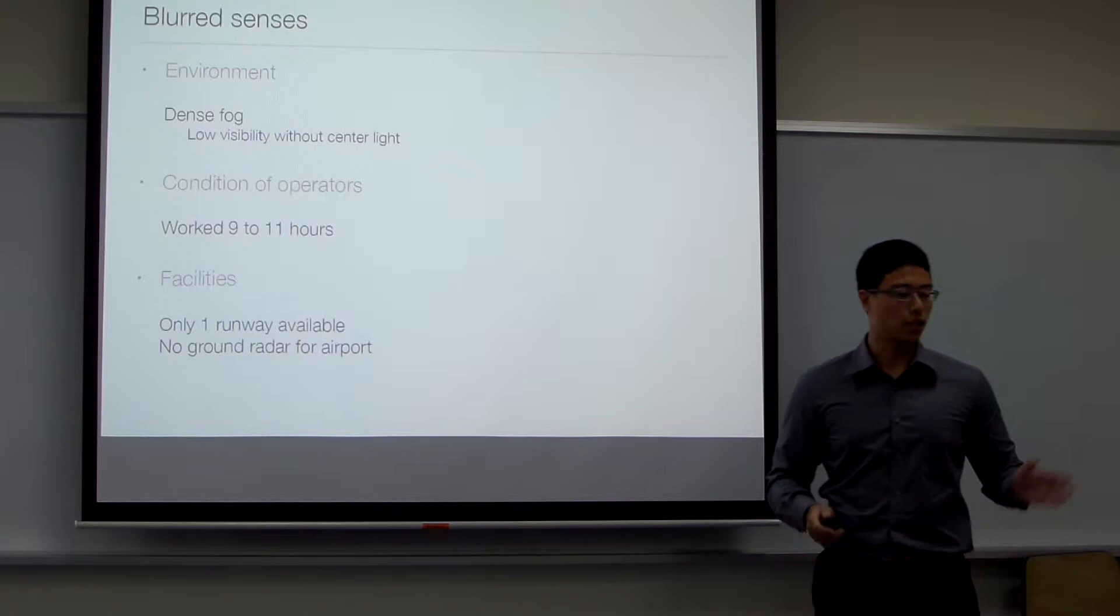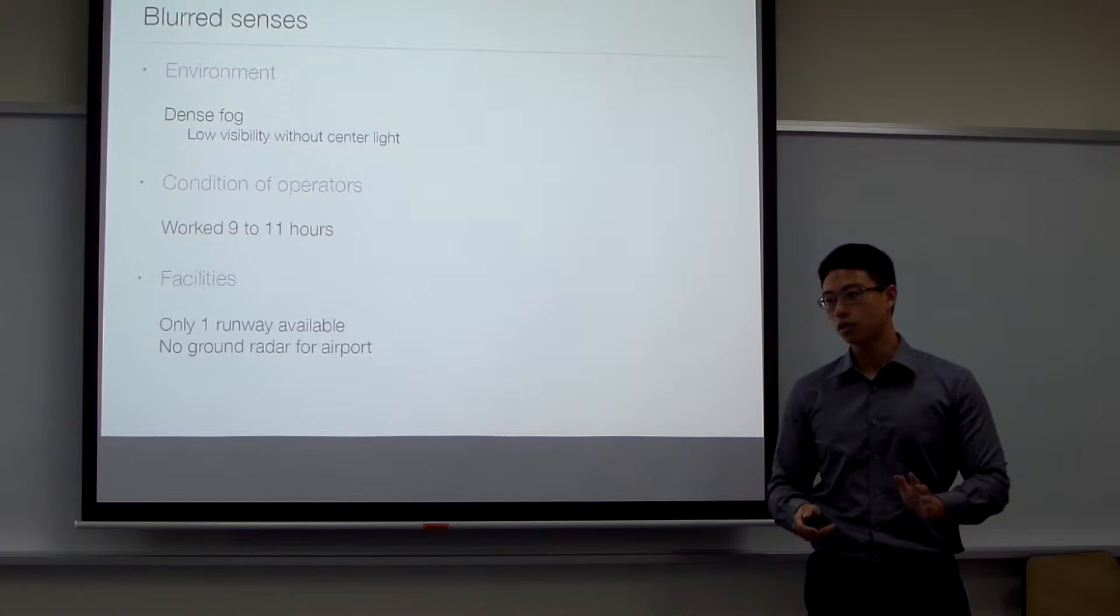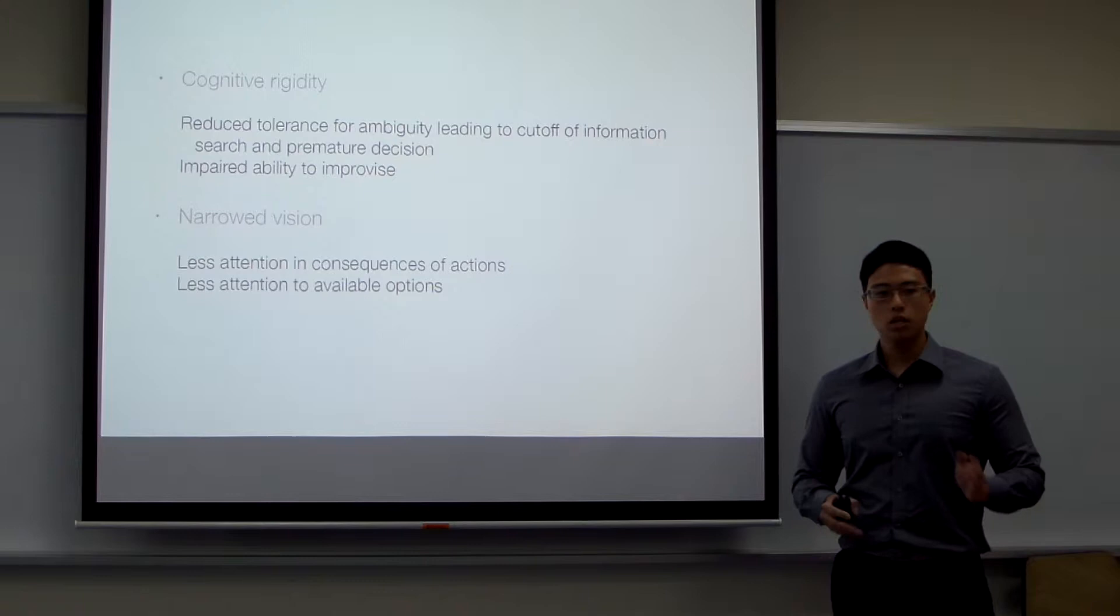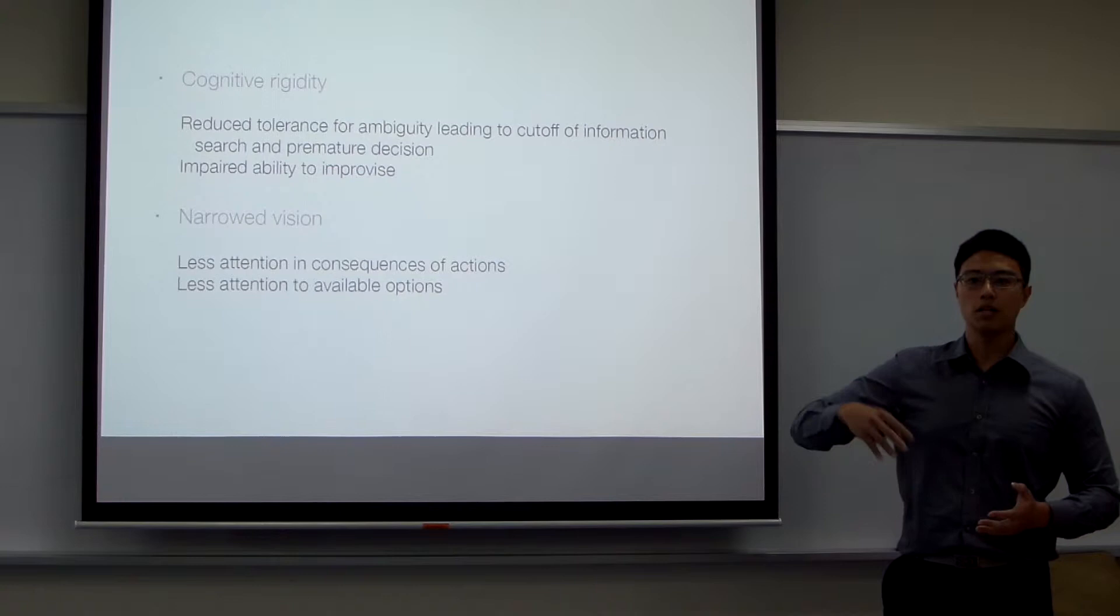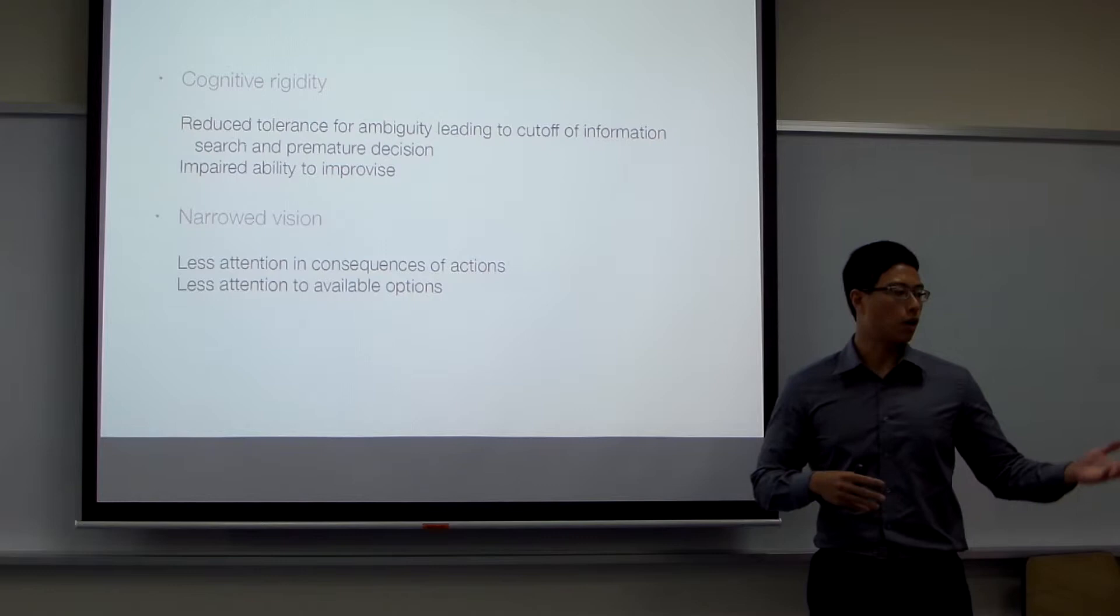Next is cognitive rigidity. Here we're talking about reduced tolerance for information that they get. They will probably block off certain information. For example, maybe a co-pilot says 'Hey pilot, captain,' but maybe he didn't hear that. So this would cause him to have an inability to improvise with the resources that they may have.